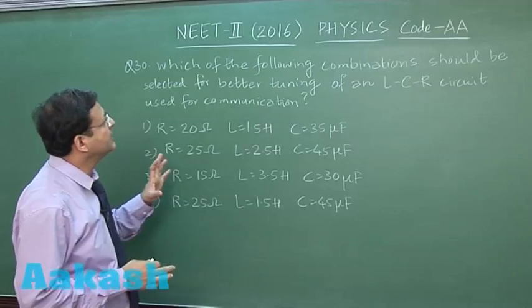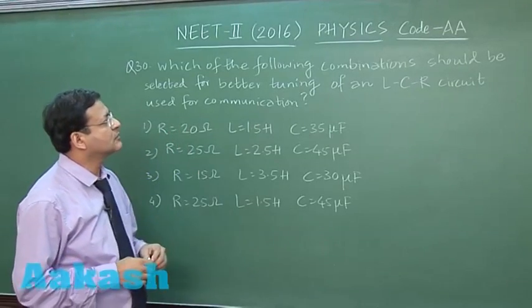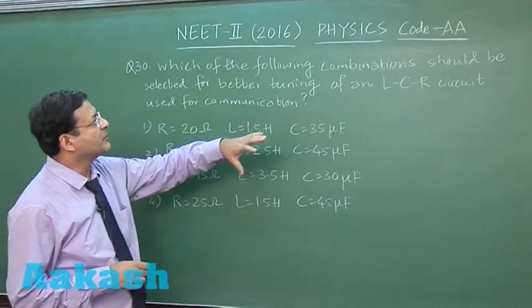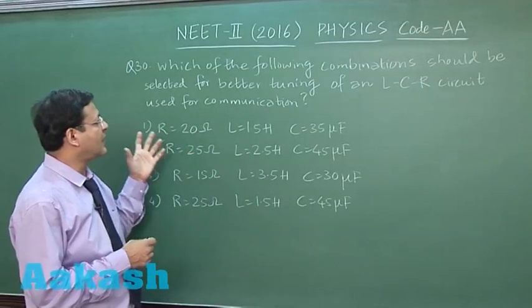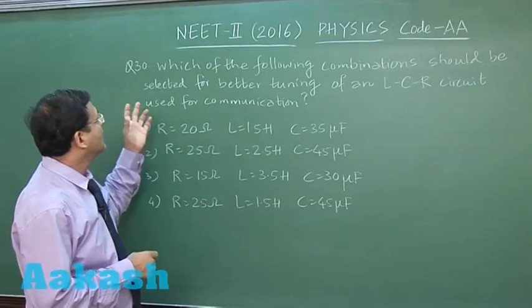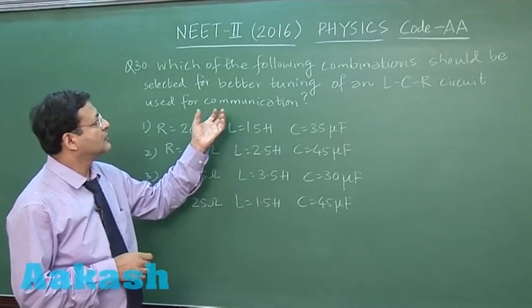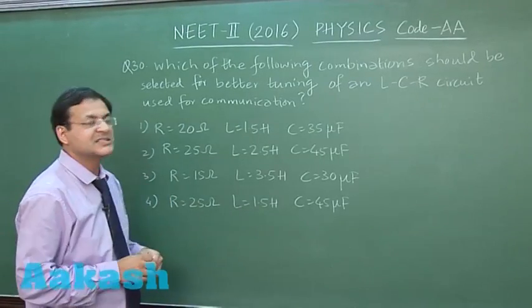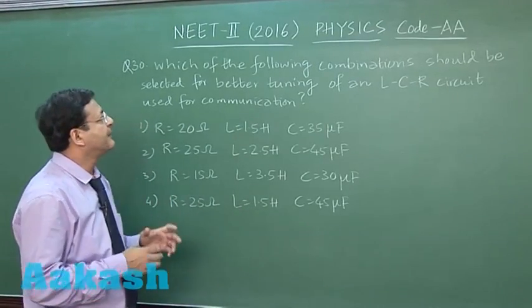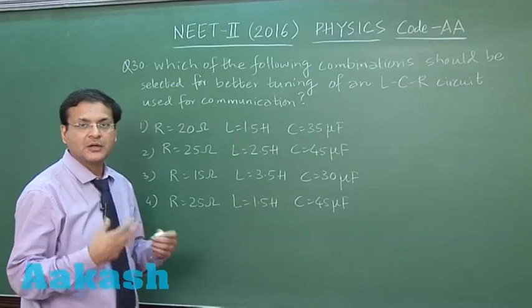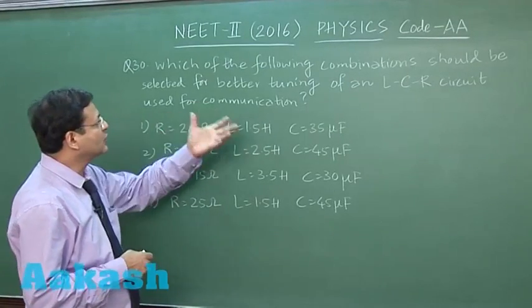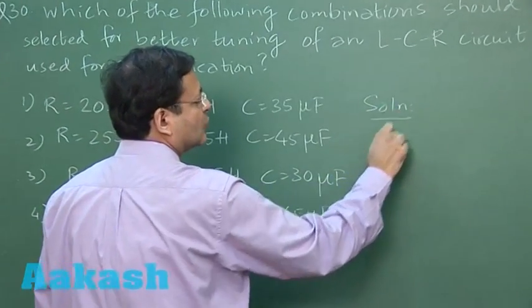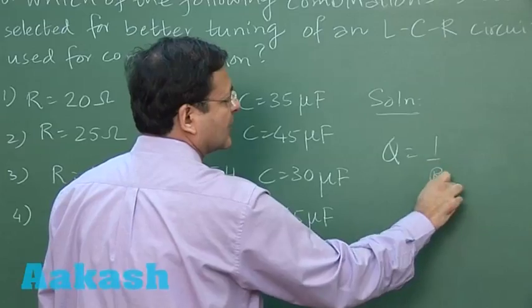Question 30 is based on quality factor. Which of the following combinations with different values of R, L, and C provides better tuning of an LCR circuit? This is based on series resonance. The best communication is done for best quality factor. Better tuning means better quality factor.